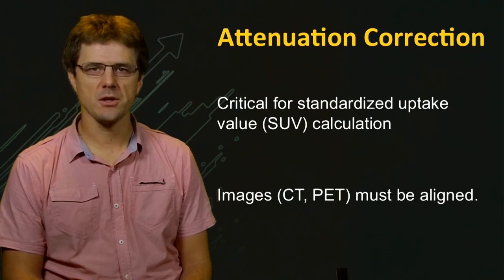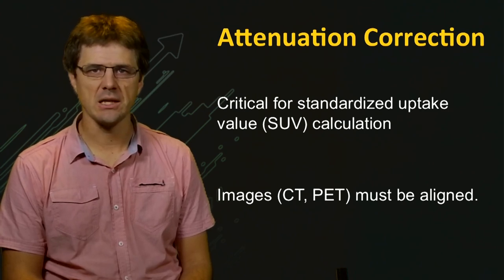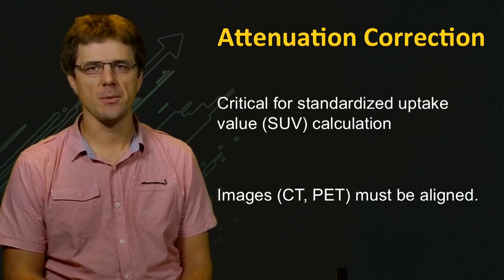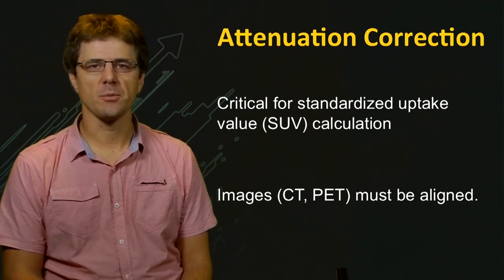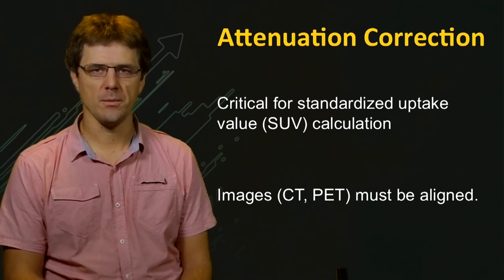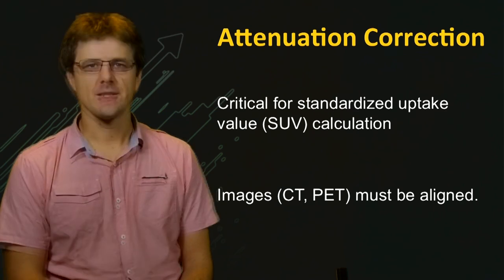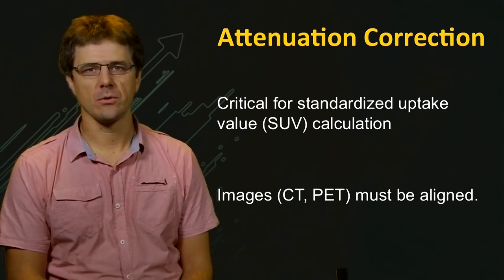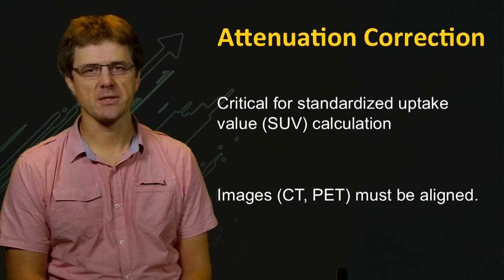In order to perform attenuation correction of PET images via CT, the images must be in alignment. Typically, this is achieved by combining multiple modalities in one machine, such as the CT PET scanner. This same technique is also used to correct SPECT data in a CT SPECT scanner.